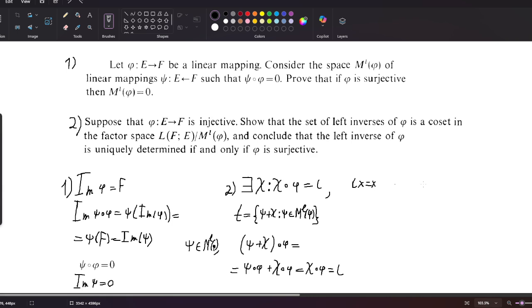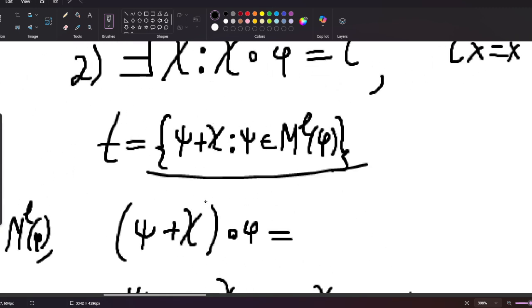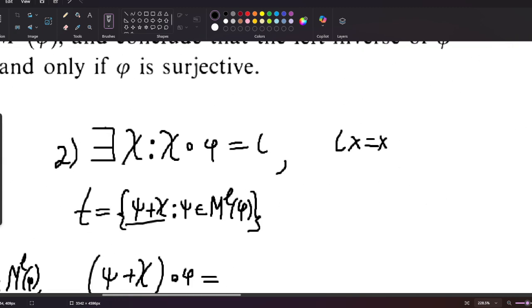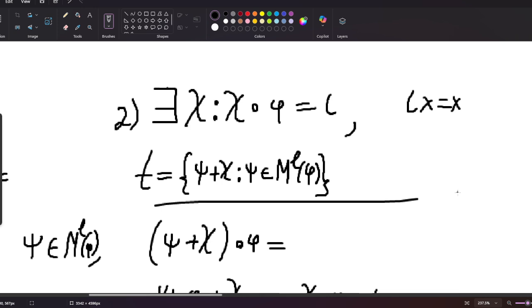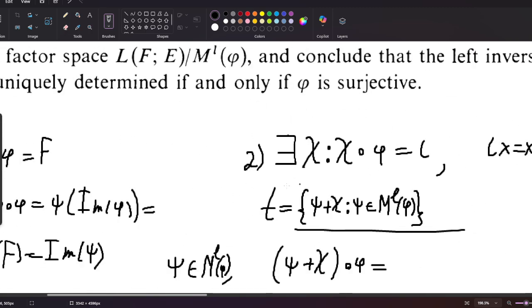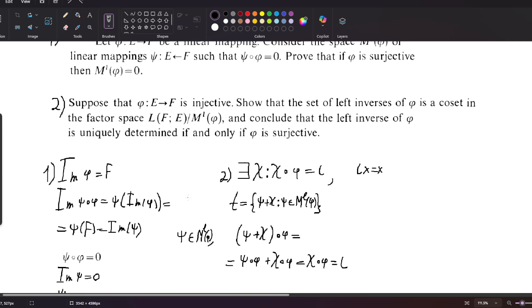Now we have to show that the left inverse of phi is uniquely determined if and only if phi is surjective. This set will have only a singular element only under the condition that psi is singular. If phi is surjective, and as we've said phi is injective, then phi is an isomorphism and the inverse is uniquely defined. So we have to show it's not uniquely determined if phi isn't surjective.